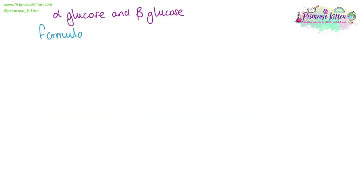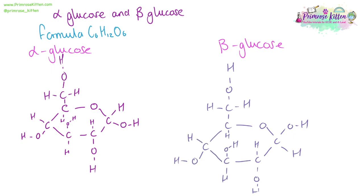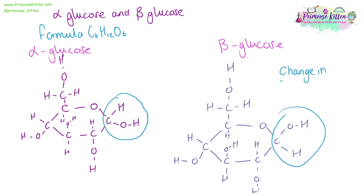There are two types of glucose you need to know: alpha-glucose and beta-glucose. They both have the same formula, C₆H₁₂O₆, giving them 6 carbons, 12 hydrogens, and 6 oxygens, but they are arranged differently. The difference is the hydrogen and the OH group on the right-hand side — in one they are up, and in the other they are down. There is a change in spatial arrangement. On a flat screen this doesn't look very significant, but it really is important, and that's easier to see when we move into 3D.